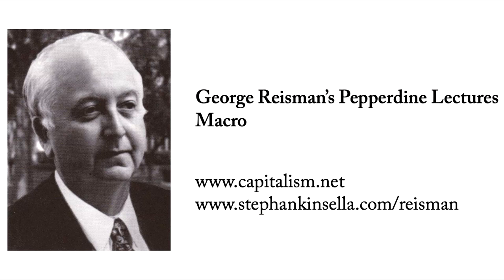This is the whole boom-bust cycle. The boom phase is when banks are creating new and additional fiduciary media, enlarging the quantity of money, putting it into the system through the loan market. So long as the quantity of money is growing, the volume of spending is growing, profits are picking up, everything looks happy and rosy. But under a gold standard there is a limit to how far that process can be carried, and as the amount of outstanding fiduciary media gets too large, things start to happen.